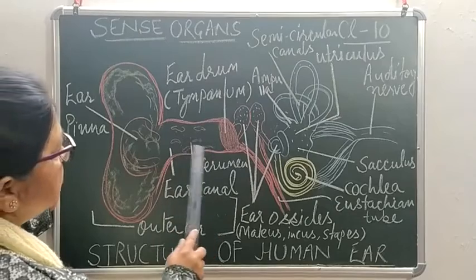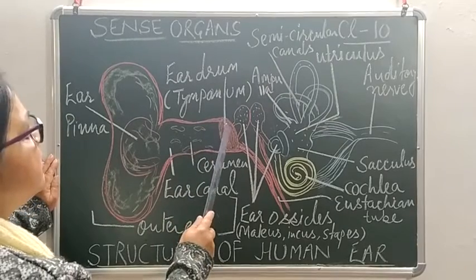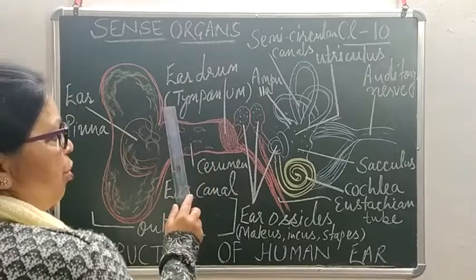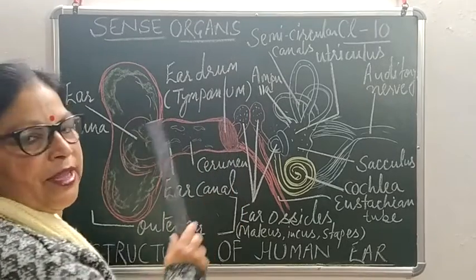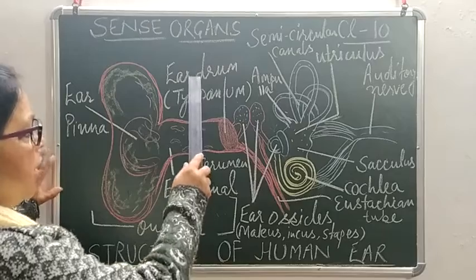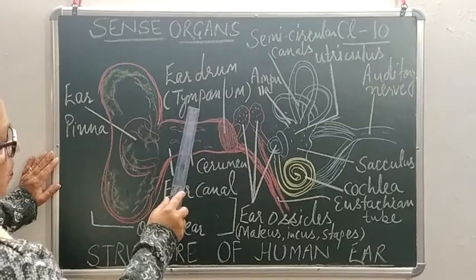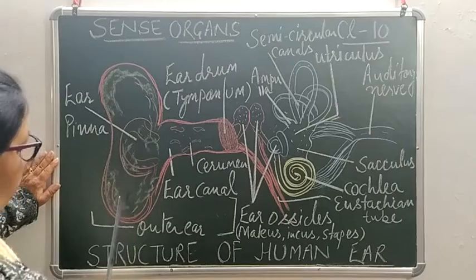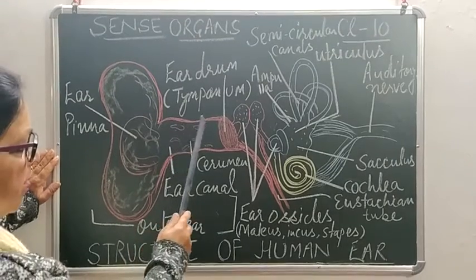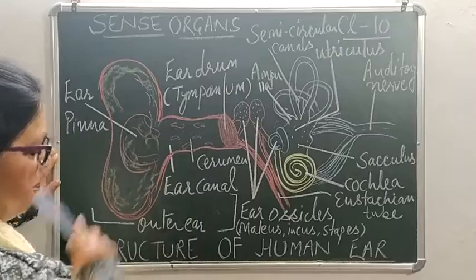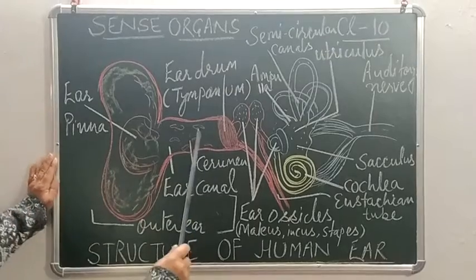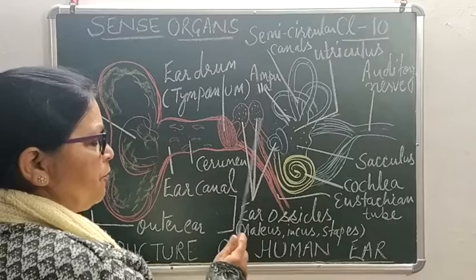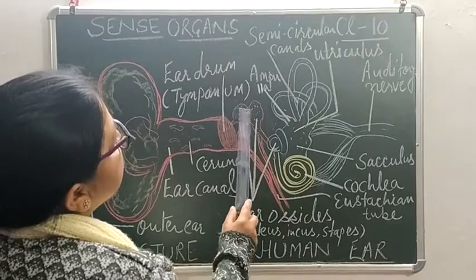So the parts of the outer ear are: number one, the external ear that is ear pinna; number two, the ear canal; and number three, the ear drum, also called the tympanum. Tympanum and ear drum are the same part. These are the three parts of the outer ear.